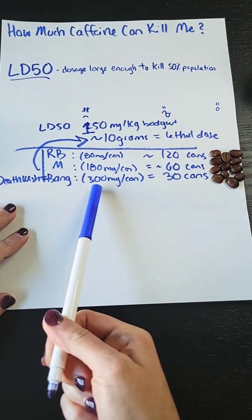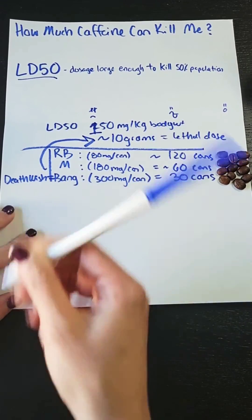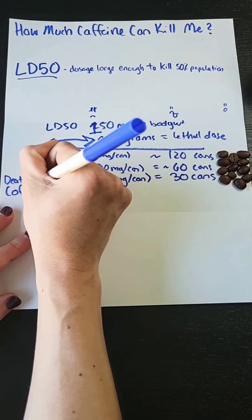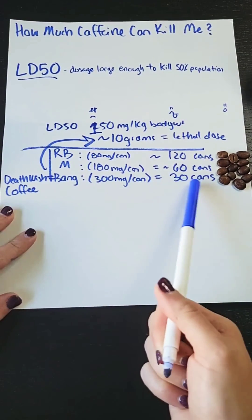Case in point, if you were a coffee drinker, there's something called Death Wish Coffee, which has about the same amount of caffeine as Bang. So it would only take about 30 cups of this coffee to kill you. Yes, this is coffee, but there is such a thing as too much coffee.